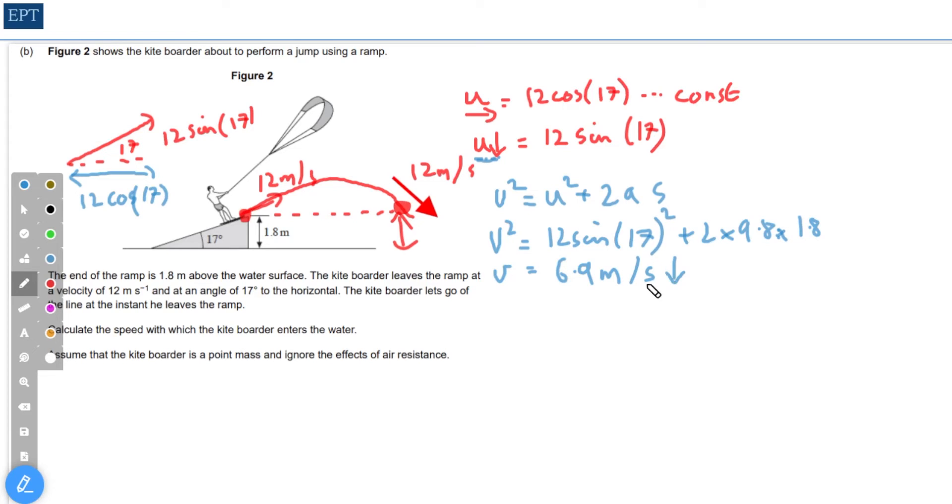Now that we've got the two components of the velocity as our kite boarder hits the water, we can consider that as a vector triangle. The horizontal component, which is unchanged, and a vertical component. We're finding the sum of those two components. Going across in the horizontal direction, we have 12 cosine 17 unchanged and constant, and then going down we have 6.9 meters per second.